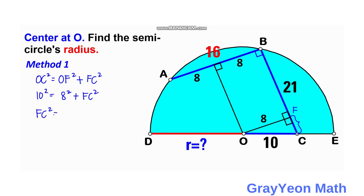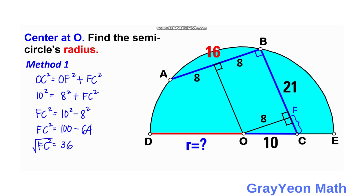OC is 10, so 10 squared equals 8 squared plus FC squared. FC squared equals 100 minus 64, which equals 36. So FC equals the square root of 36, which gives us FC equal to 6 units.